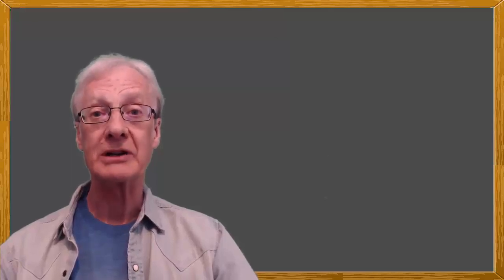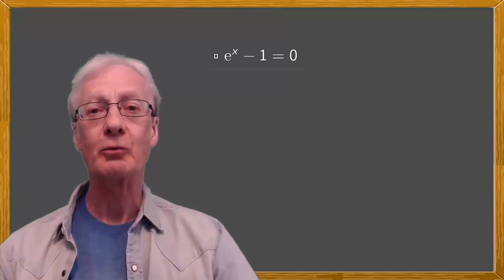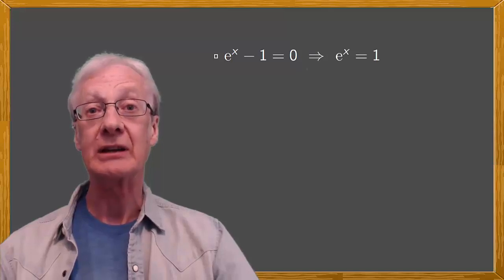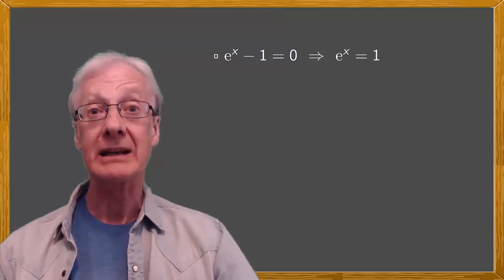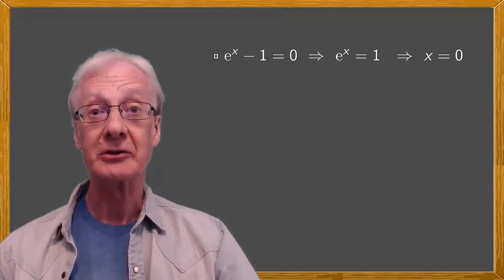Moving on from polynomial equations. Say you want to solve the equation e to the x minus 1 equals 0. You can just move the 1 to the other side to give e to the x equals 1 and ask what values of x make e to the x equal to 1. There is only one: x equals 0, and that's the solution.